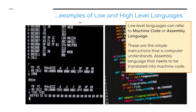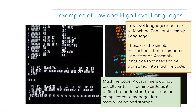We can group machine code and assembly language into low-level languages. Here's an example of assembly language. Underneath, we've got a high-level language, maybe Python. These are simple instructions that a computer understands. Assembly language does need to be translated into machine code before it can be understood. Programmers do not usually write in machine code, as it is difficult to understand — it's only binary or hexadecimal, and it can be complicated to manage data manipulation and storage.